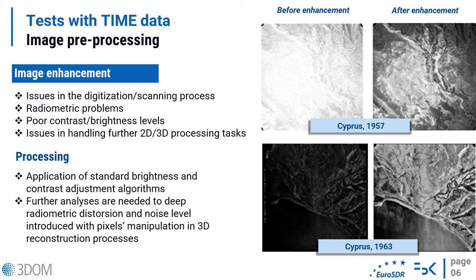Some of these topics were handled during our experiments with Time data, starting from image preprocessing, which is an unavoidable task in many cases due to the relevant radiometric problems related to digitization and scanning issues, which can affect further 2D and 3D processing tasks. In many cases we start by applying standard brightness and contrast adjustment algorithms, but further analyses are needed to understand the radiometric distortion and noise level introduced with this pixel manipulation, especially for 3D reconstruction purposes.